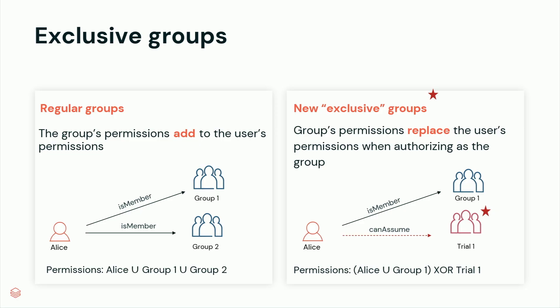So what we're introducing is exclusive groups. Today we have regular groups with union semantics of permissions: if you're a member, you get all the permissions of all the groups you're a member of. With these new exclusive groups, instead of adding permissions to the user, the group replaces a user's permissions. So if Alice is a member of group one and can assume trial one — which is an exclusive group — she either acts as Alice and has the union of all her permissions, or she acts as trial one and only has trial one's permissions.